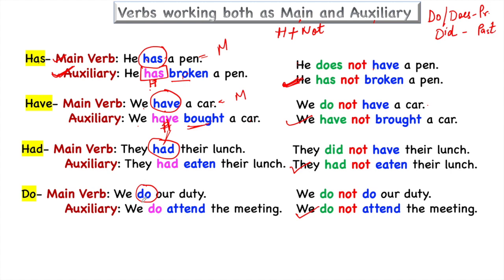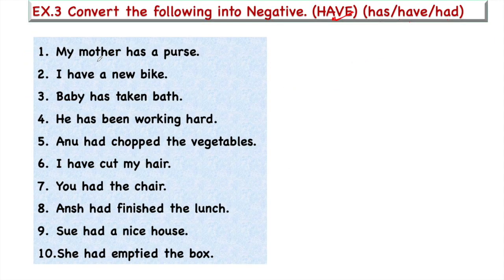'Do' is a main verb here with no helping verb, so take the help of 'do.' With 'we,' 'do' comes: 'We do not do our duty.' So if the verb is working as a main verb, rules are different; if it is working as auxiliary verb, simply put 'not' after it. We have to find out whether 'has,' 'have,' and 'had' are working as main verb or auxiliary verb — in both conditions, rules will be different.